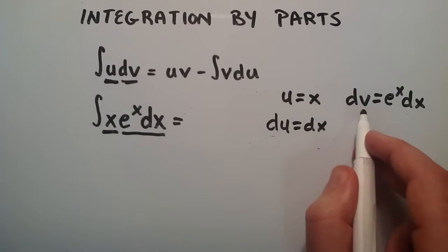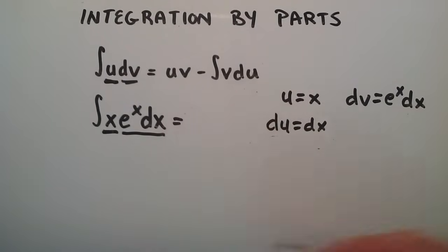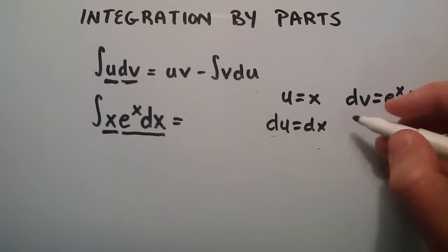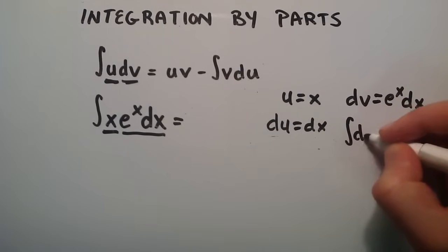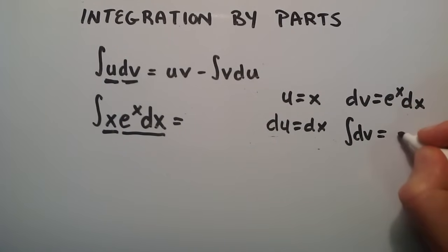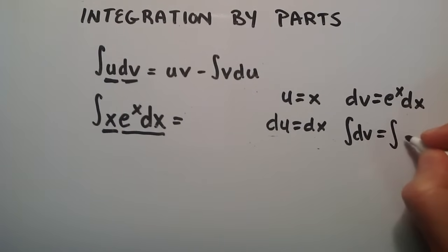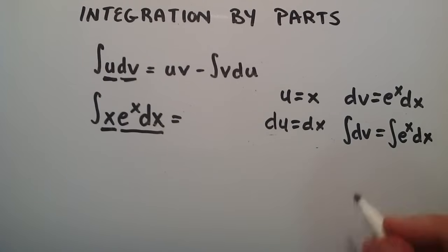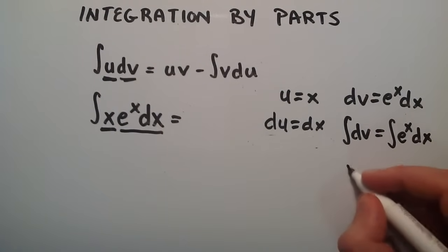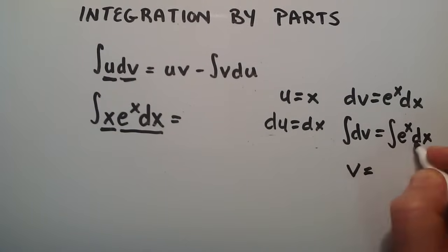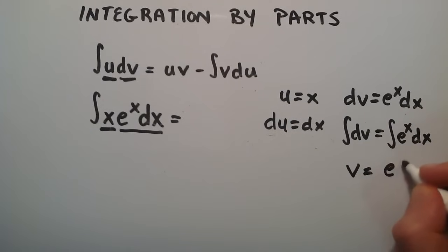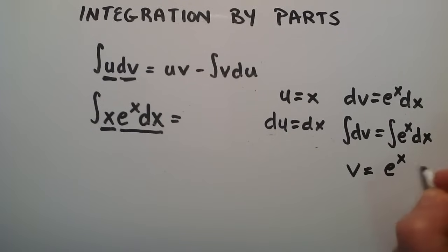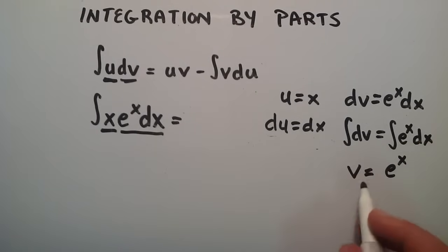Now let's figure out what v is going to be. If we integrate both sides, we would have the integral of dv equals the integral of e to the x dx. If we integrate this side, we simply have v. If we integrate this one, we have e to the x plus some constant, but we're not going to worry about the constant right now. So v is equal to e to the x.